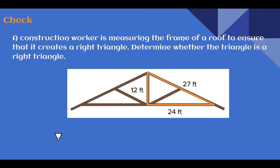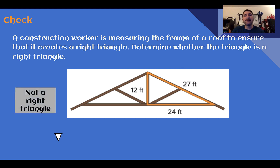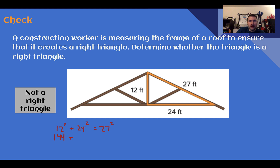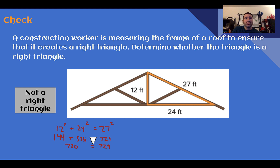Check your understanding: using the picture, determine whether the triangle is a right triangle. Pause the video now and complete the check. This is not a right triangle. To check, we see if the Pythagorean Theorem works: is a squared plus b squared equal to c squared? 12 squared is 144, 24 squared is 576. Is that equal to 27 squared? That's 729. 144 plus 576 is 720, not 729. So they are really close, meaning this angle is probably very close to being a right angle, but they are not exactly equal, so this is not a right triangle.